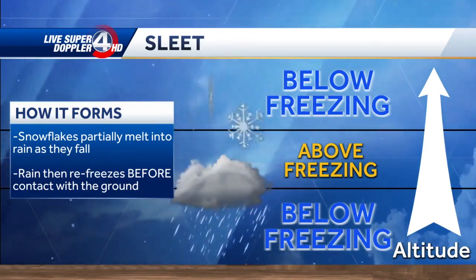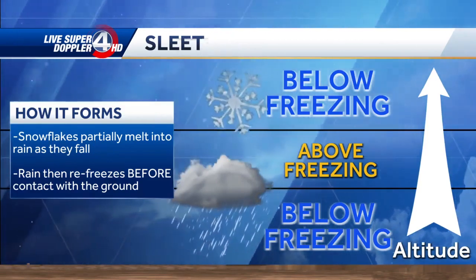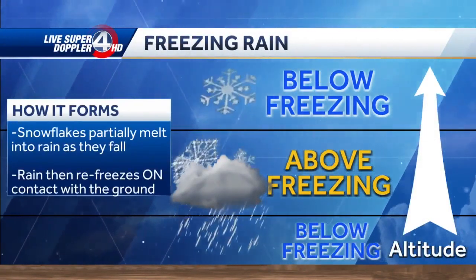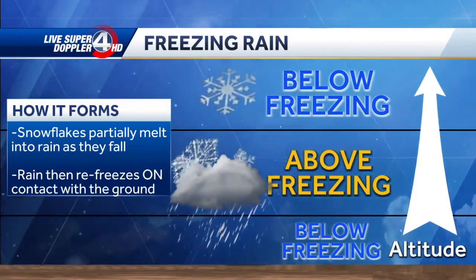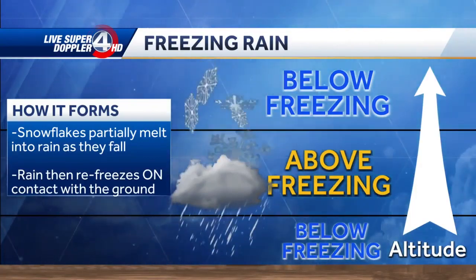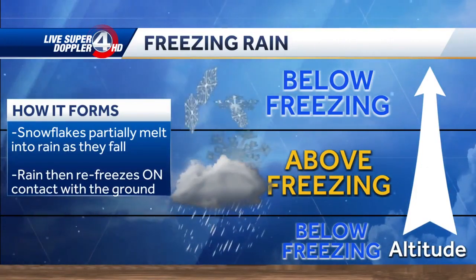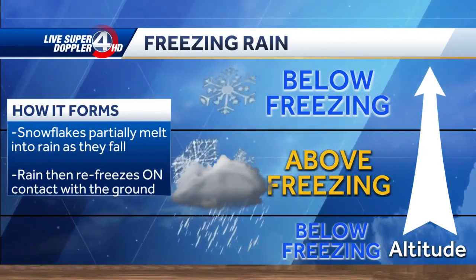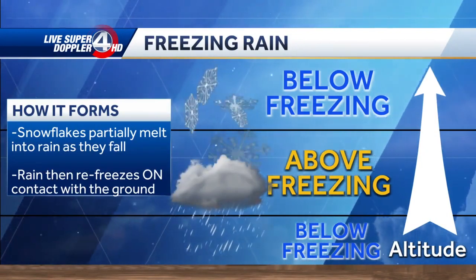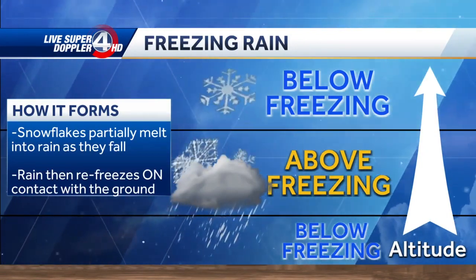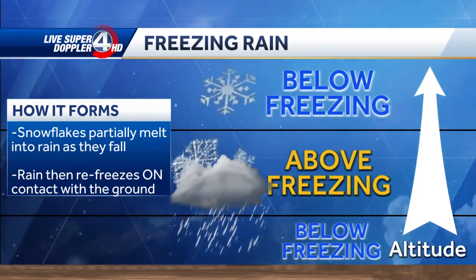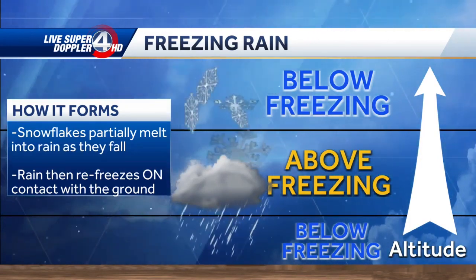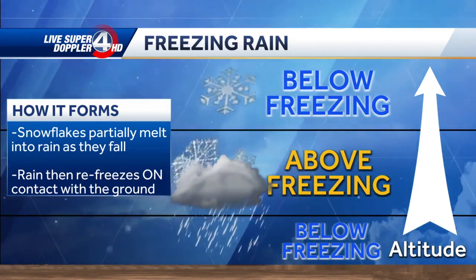Freezing rain is a little bit different. When that happens, the warm air layer is usually a little bit thicker. And when that happens, the rain freezes on contact with the surface. As soon as it hits, it's supercooled, which means whatever it sticks to immediately forms a layer of ice on top of that. And that could definitely pose the biggest threat in terms of overall impacts.